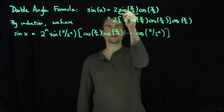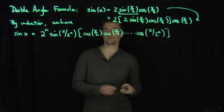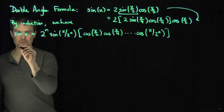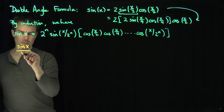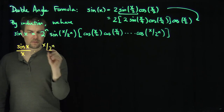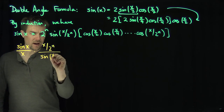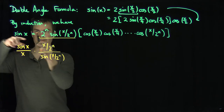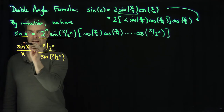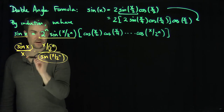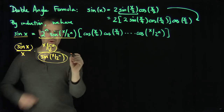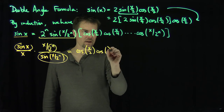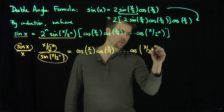Now I'll do a common trick. I'm going to write sine of x over x, multiplied by x over 2 to the power of n, divided by sine of x over 2 to the power of n. What I've done is taken the 2 to the power of n times sine of x over 2 to the power of n and put it in the denominator. The x terms cancel, leaving us with simply the product: cosine of x over 2 times cosine of x over 4, all the way down to cosine of x over 2 to the power of n.